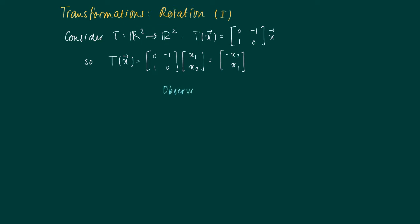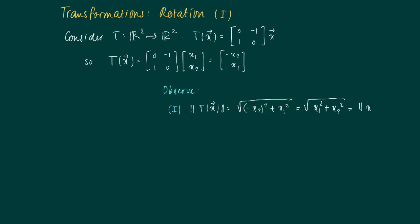We may observe several things here. First of all, look at the length of the transformed vector — the norm of Tx. It equals the square root of (-x₂)² + (x₁)², which of course equals the square root of x₁² + x₂². This is just the same as the length of x, so this linear transformation is length-preserving: what comes out is just as long as what we put in.